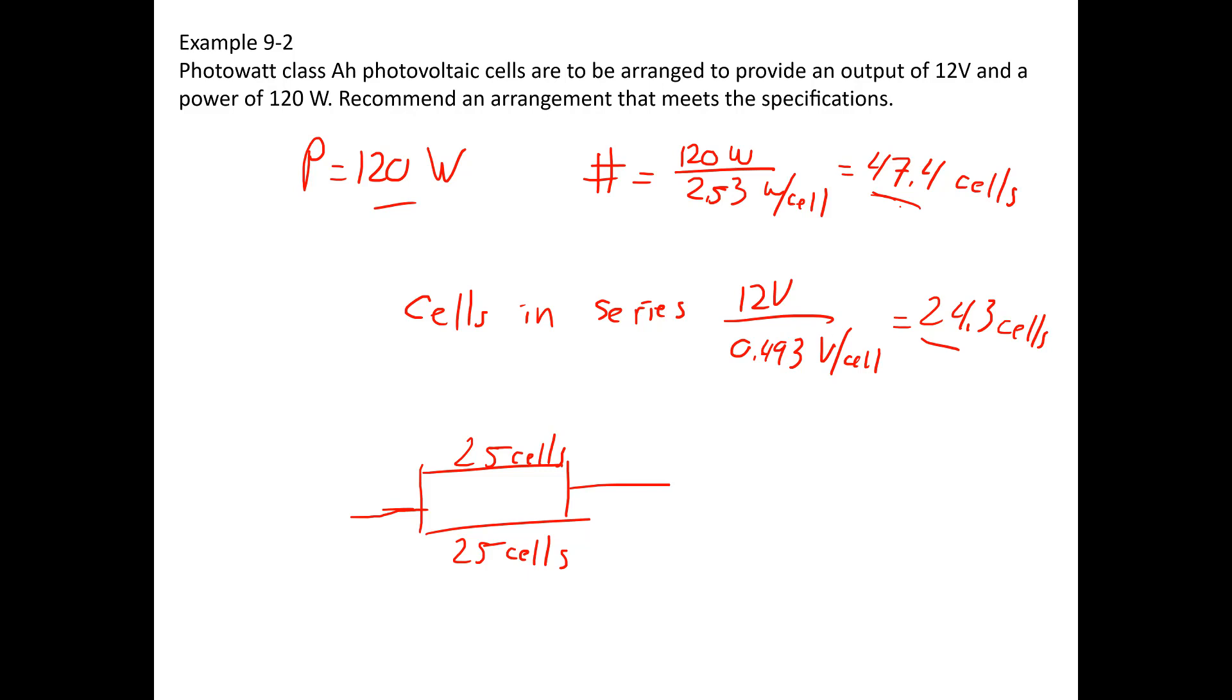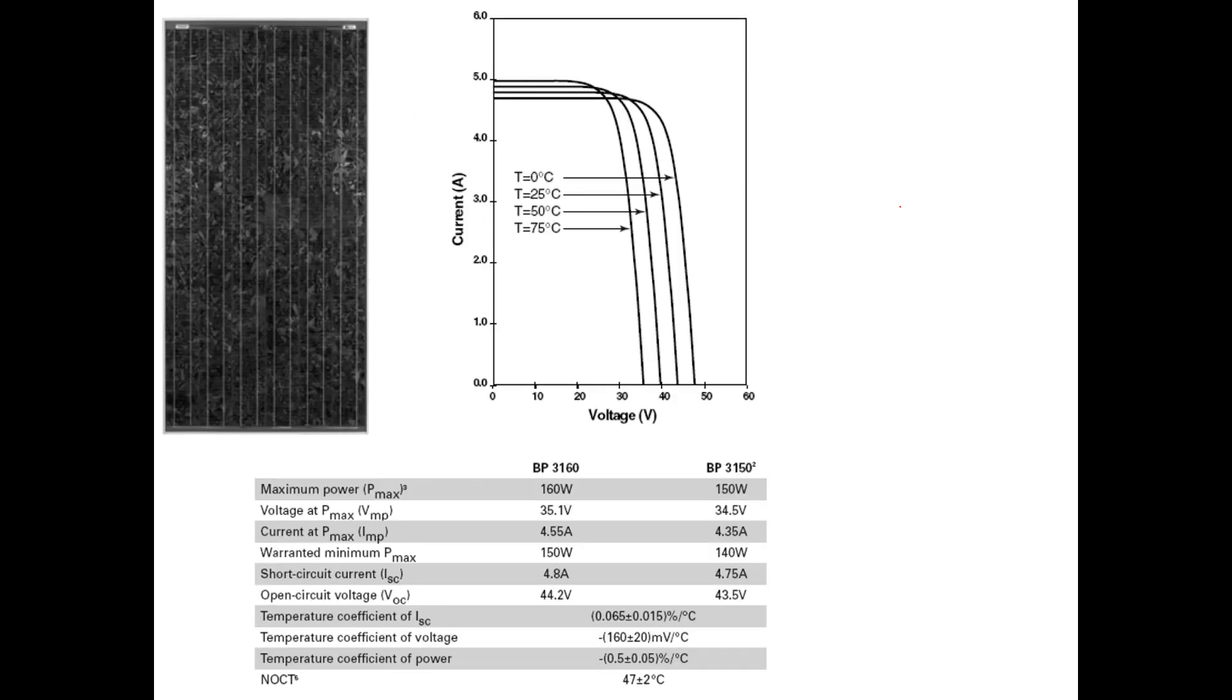And again, here's another example of a photovoltaic cell. In this case, again, you're given all the same information, power at max, the maximum drawn power per cell, and then the voltage and current at that maximum power output.